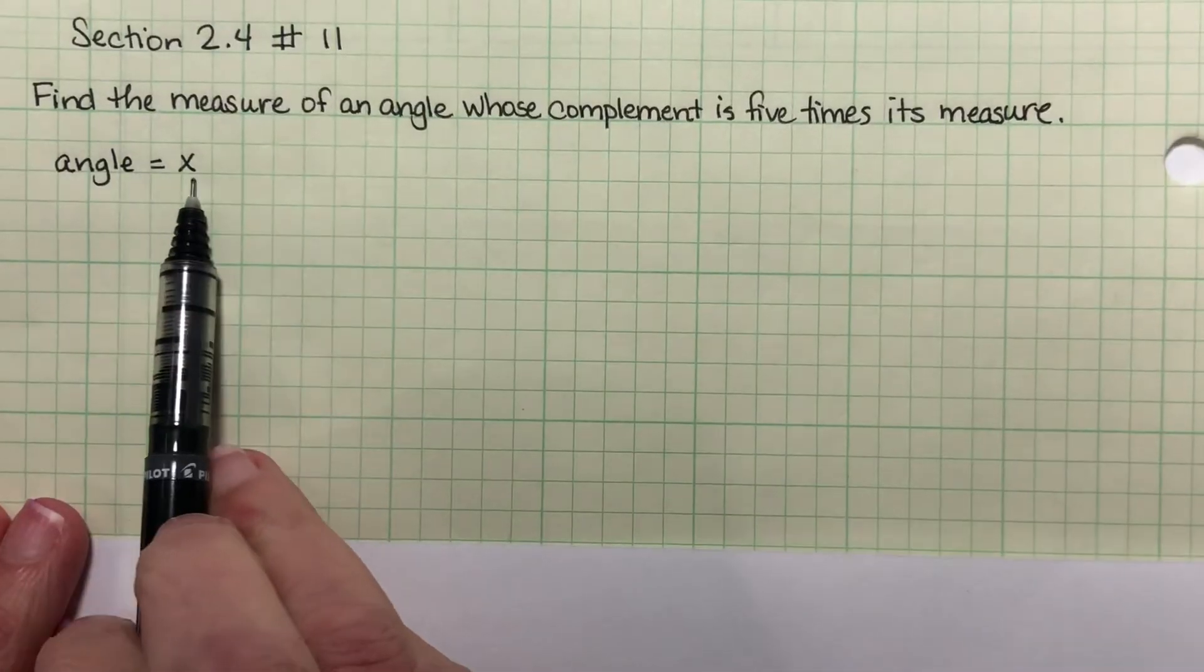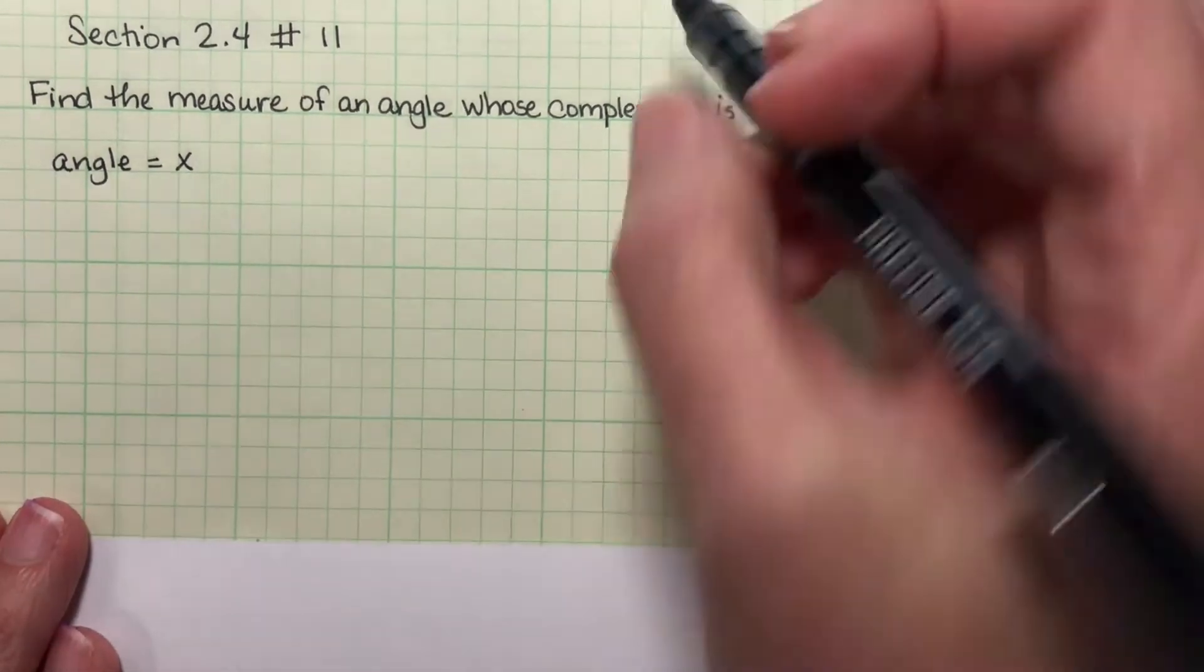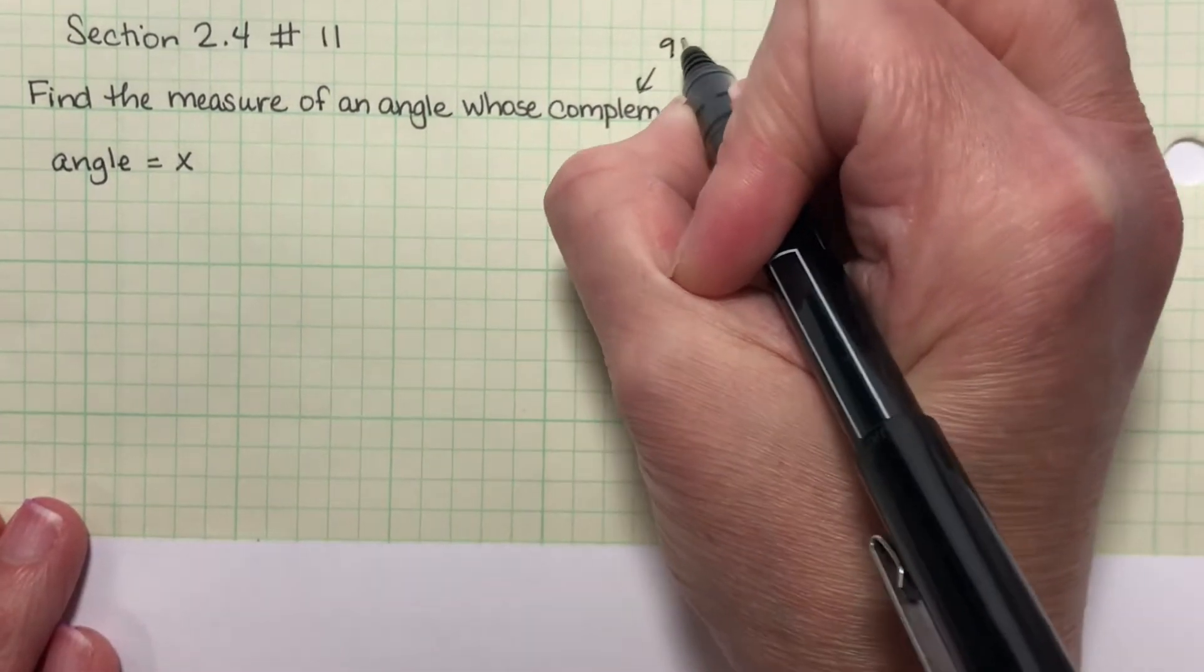I do know that the angle measurement has to be less than 90 because I'm supposed to be able to add something to it and get to 90. Complements add to 90 degrees.